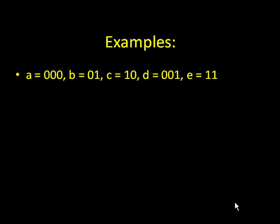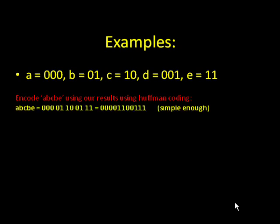Okay, now here's a question for you. Based on the results we just found, how would you encode A, B, C, B, and E using our Huffman coding? Well, it's actually pretty simple. You would take each individual character and replace it with the binary number that we found for each one.